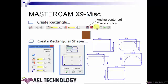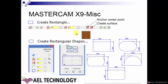If you want a surface to be created after creating a rectangle, you can opt for Create Surface, and after you create a rectangle you can see that the surface is also formed. If you want to anchor this rectangle to a center point, you have to opt for that option and define the center point either by snapping or defining the coordinates, then click OK.